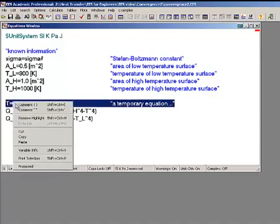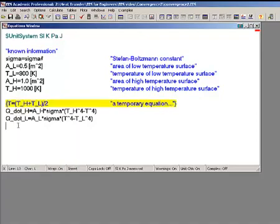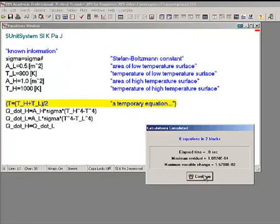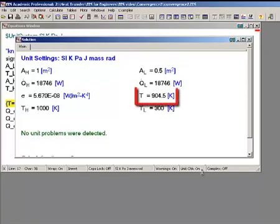Next, delete or comment out the temporary equation in the specified T and instead enter the steady state requirement that's given by equation 3. Now when you try to solve the equation set, it should solve with no problems at all. And the correct value of T you see here is 904.5 Kelvin.